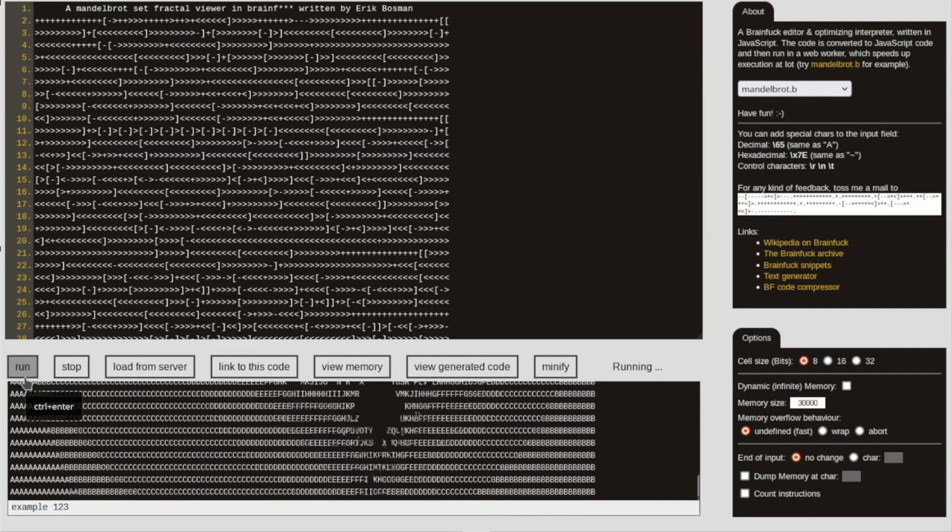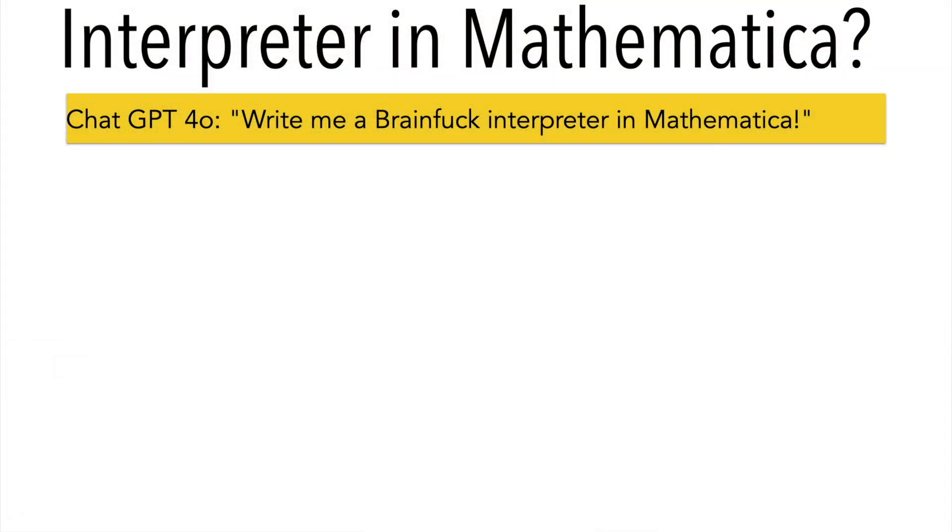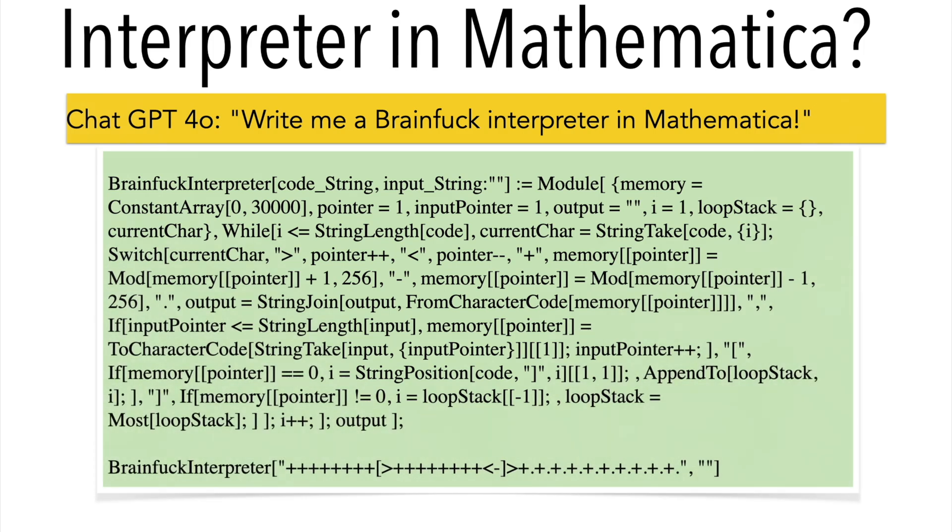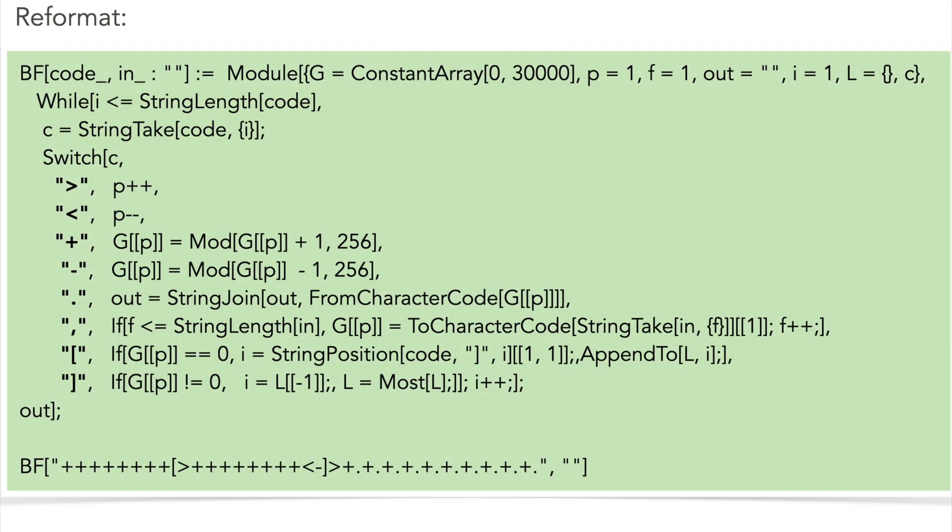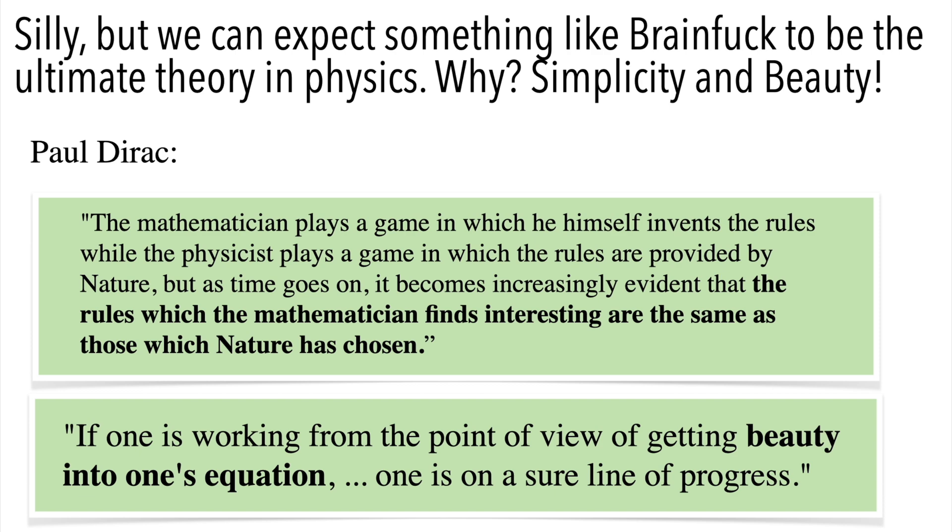There is an interpreter you can access online. I myself was sure that AI would fail to write an interpreter of Brainfuck in Mathematica, but it did. Here is that interpreter code reformatted. It's a little bit silly, but is there a Brainfuck theory of everything in physics?